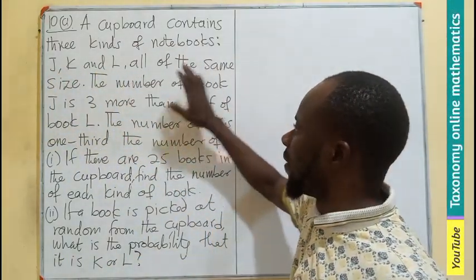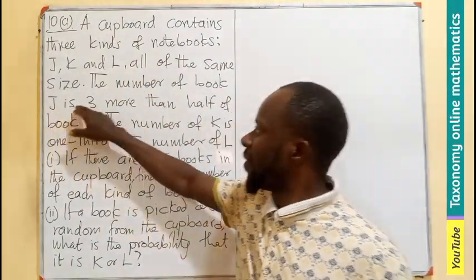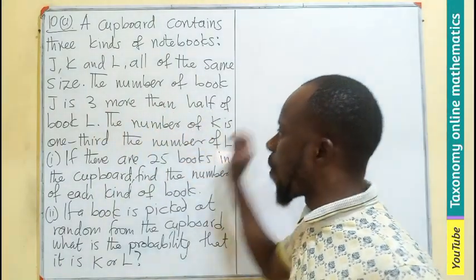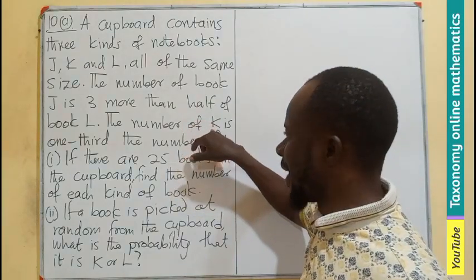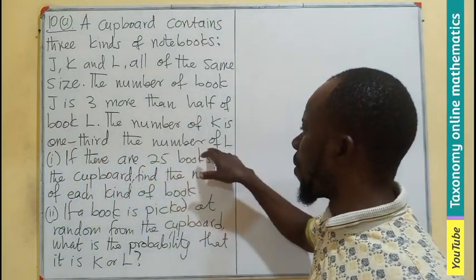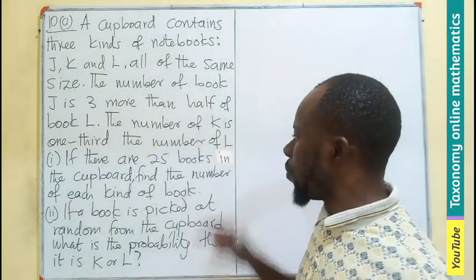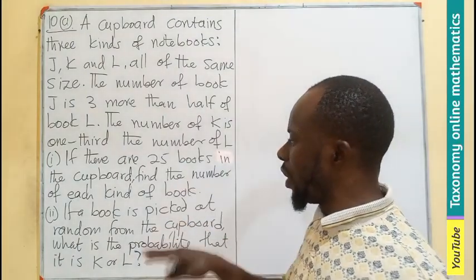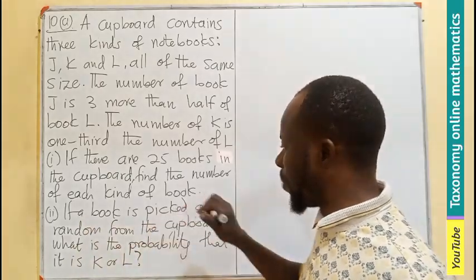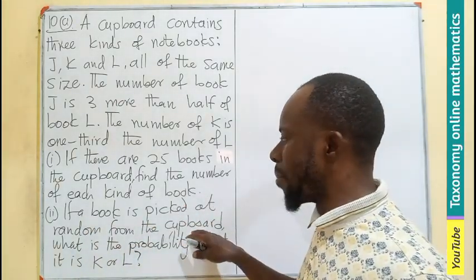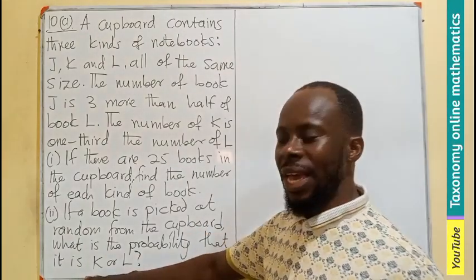The number of book J is three more than half of book L. The number of book K is one-third the number of book L. There are 25 books in the cardboard in total. We need to find the number of each kind of book.